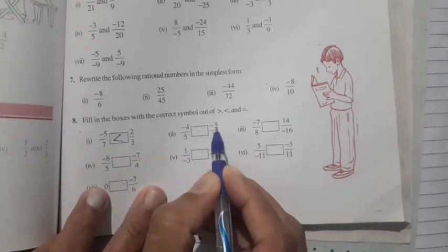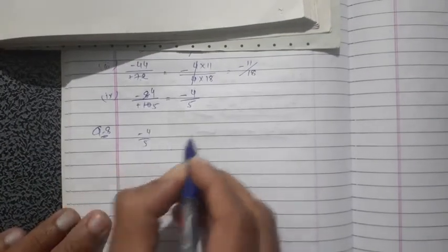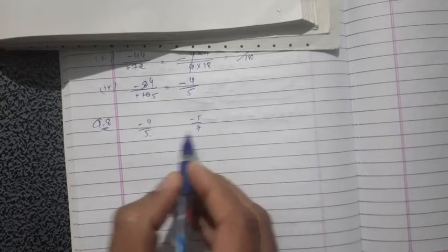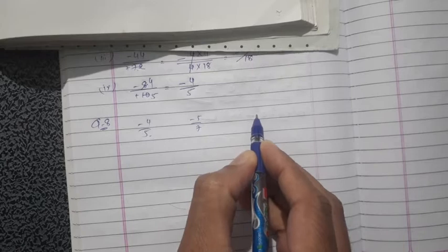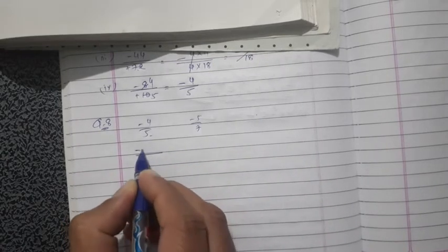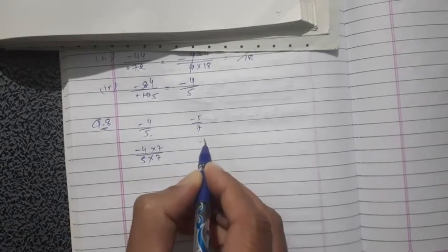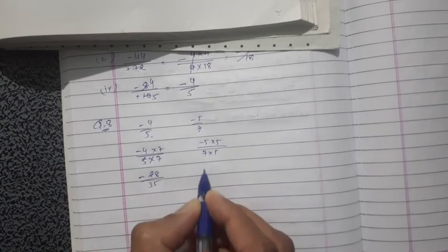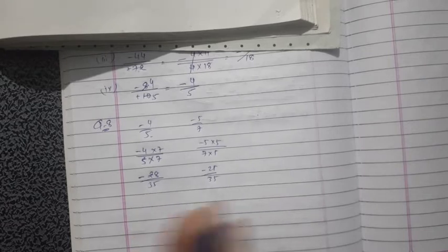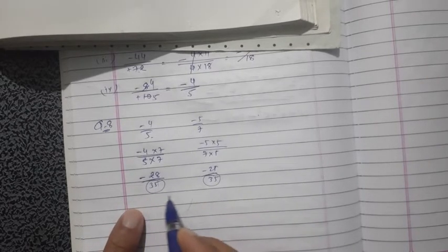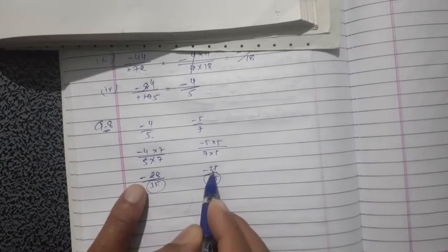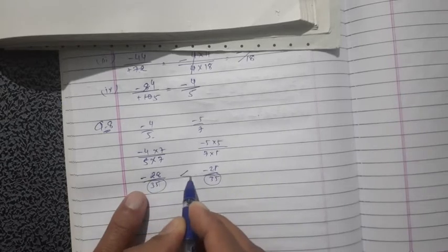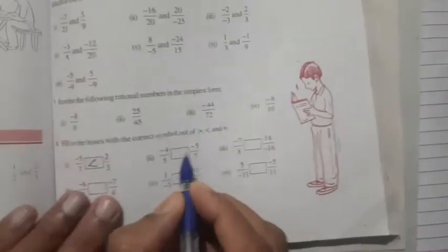Second one: minus 4 upon 5 and minus 5 upon 7. There are two methods. First method: take LCM of the denominators, which is 35. Multiply minus 4 upon 5 by 7 to get minus 28 upon 35, and minus 5 upon 7 by 5 to get minus 25 upon 35. Now compare: denominators are the same, so compare numerators. Minus 28 versus minus 25 — in negative numbers the lower number has the lesser value, so minus 28 is less than minus 25. Answer is less than.